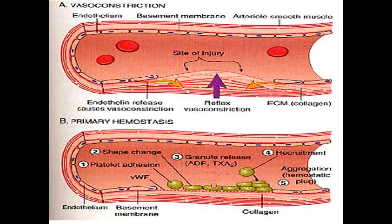Thromboxane A2 is induced by an enzyme called cyclooxygenase. The importance of knowing about this enzyme is that the drug aspirin works on this enzyme and inhibits it. Specifically, acetylsalicylic acid inhibits the COX enzyme, and therefore aspirin has anticoagulant properties.